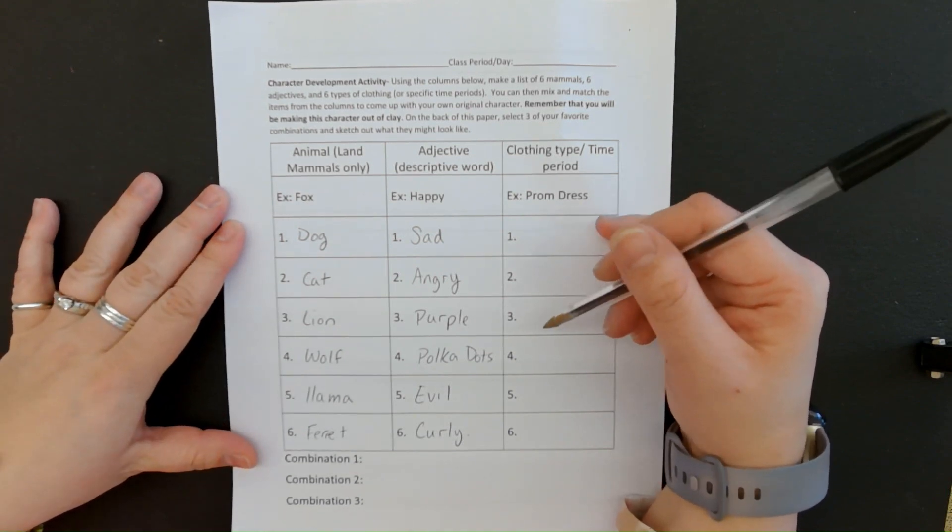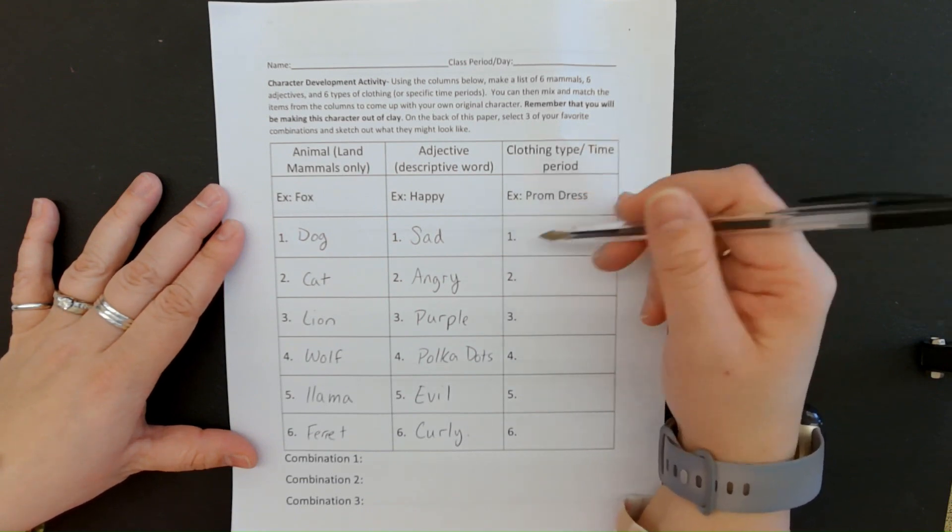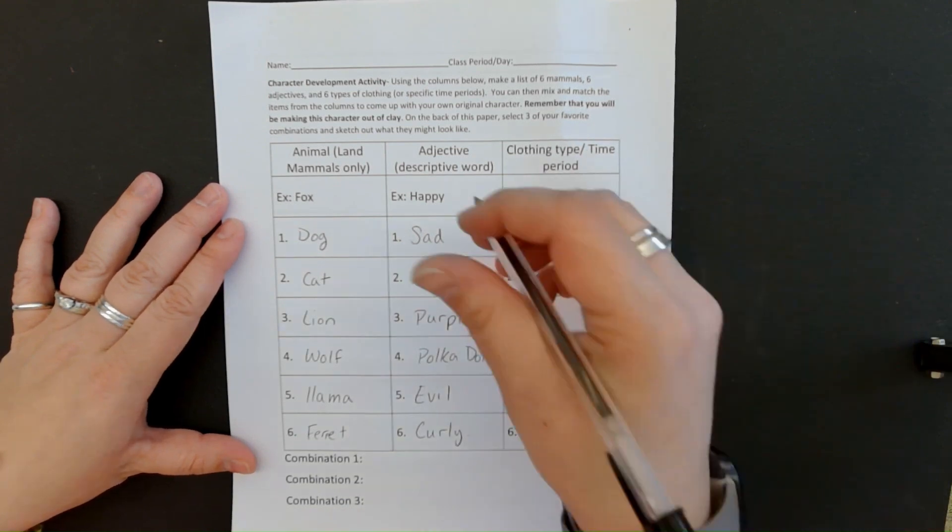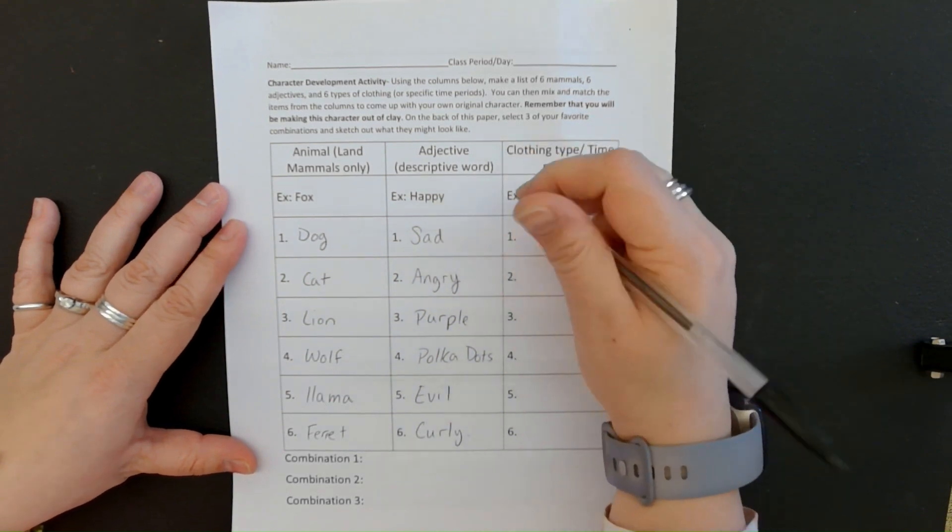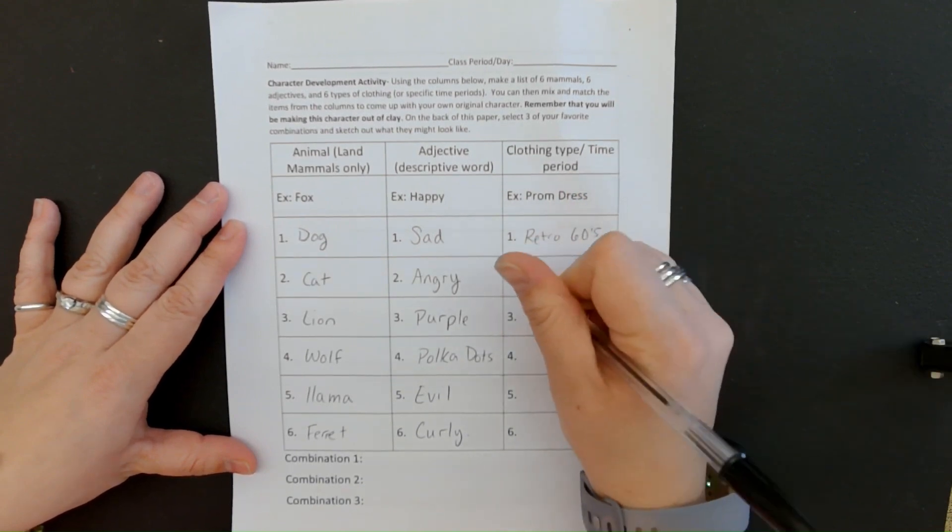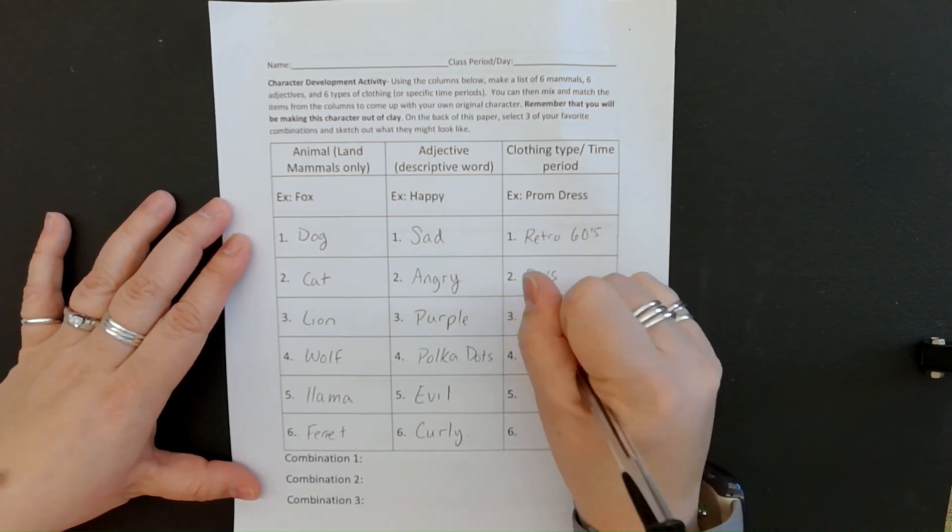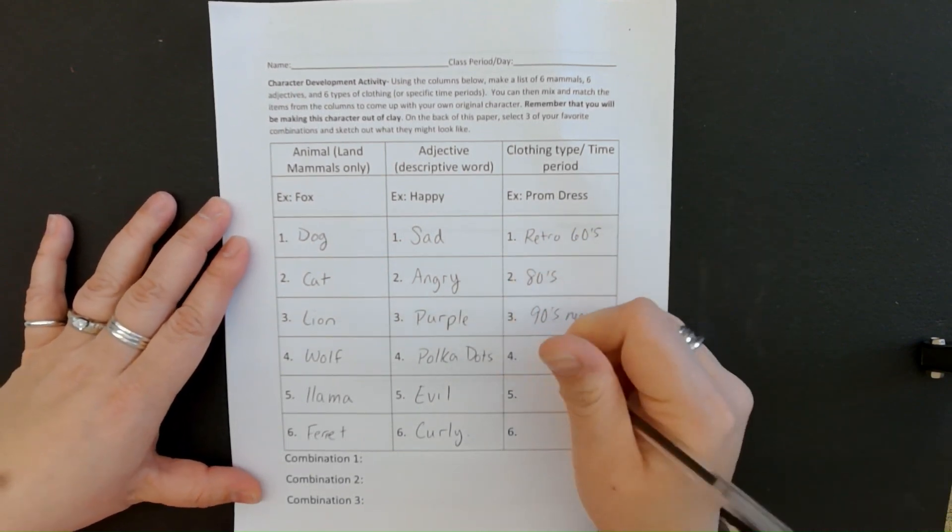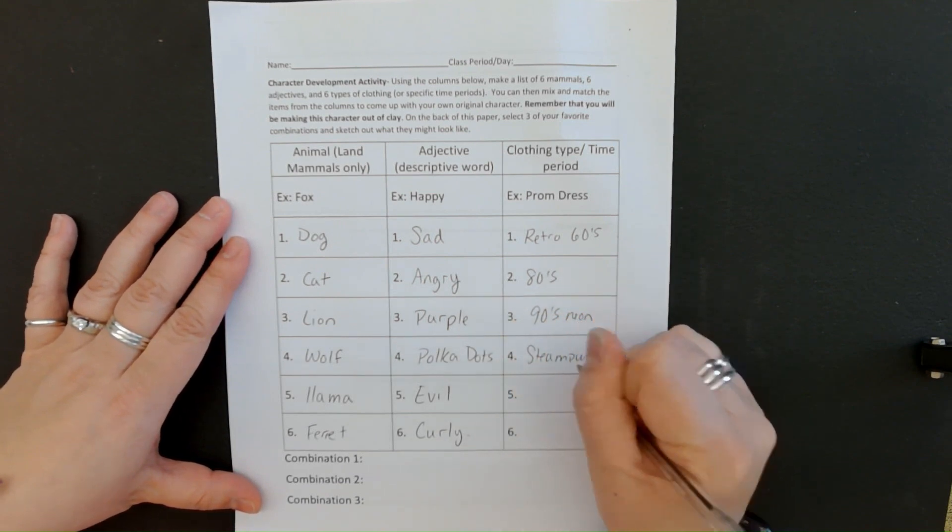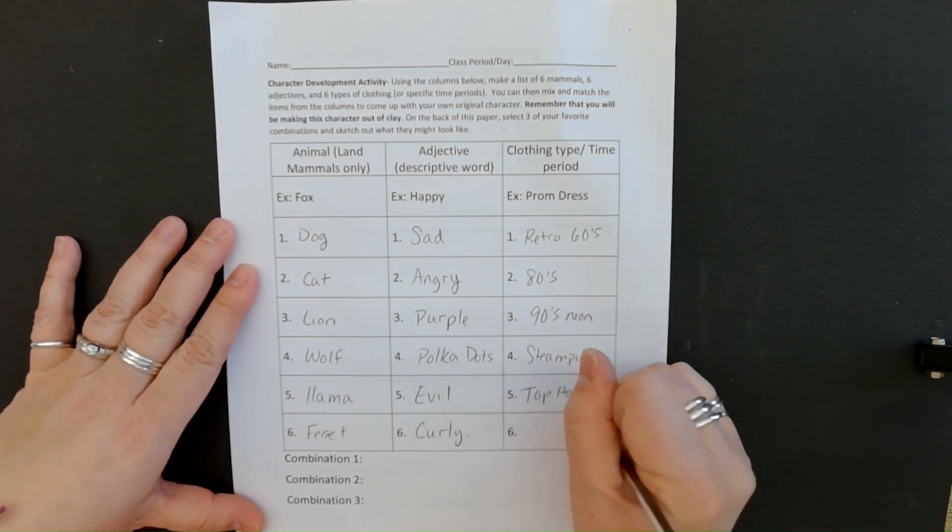Or you can pick a job. So like if your character's going to be a doctor, are they going to be a firefighter or a cheerleader that they have like the costume that kind of goes with, or a uniform that goes with their job. So I'm going to say that I'm going to pick retro sixties, it's like hippie kind of. I'm going to do eighties. I like nineties neon. Steampunk is also a fashion style steampunk. I'm going to put just regular clothing. So a top hat, tuxedo.